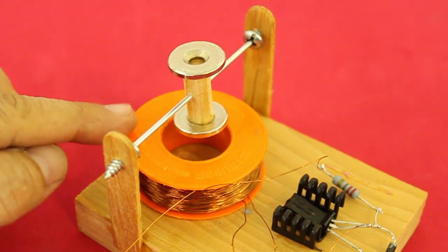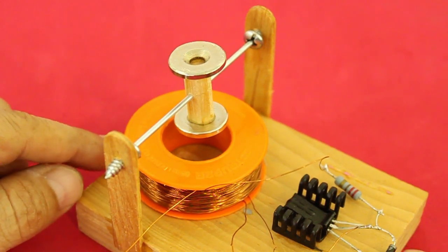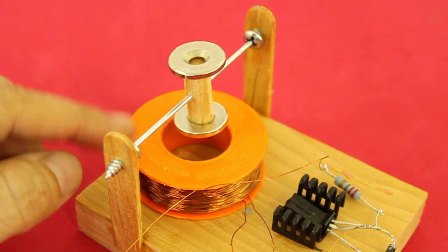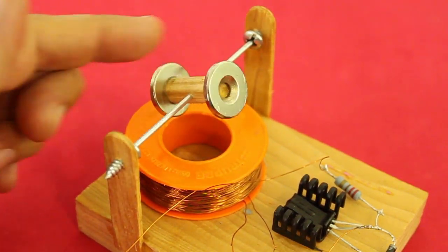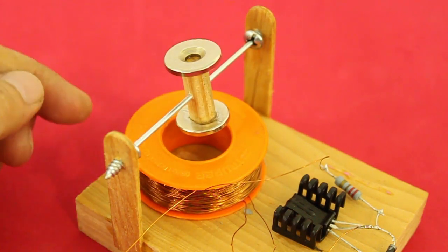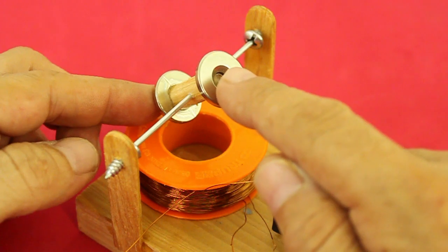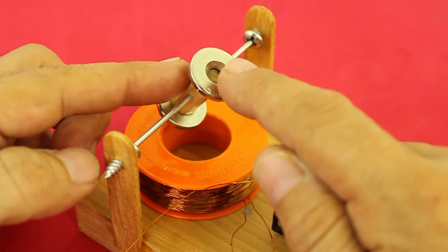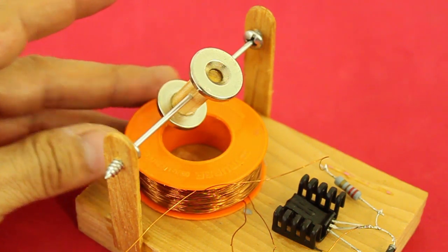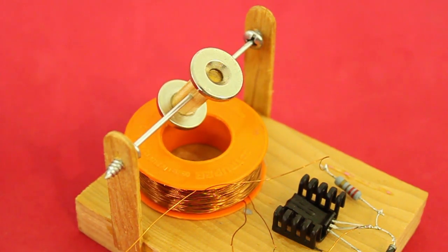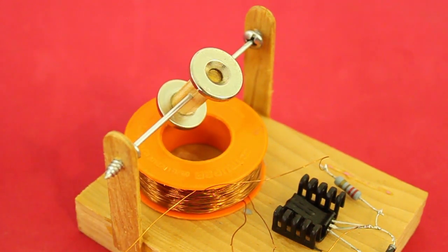And again, we are in this position. When the transistor turns on, the other coil kicks the rotor and this process continues. Both magnets have the same polarity. That is, if this is a north, the other must also be a north, and the coil must be energized such that we have also a north at the upper part.